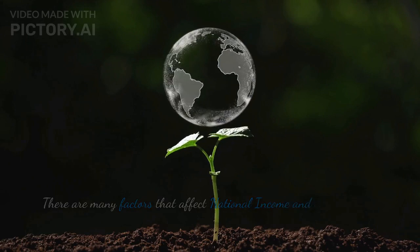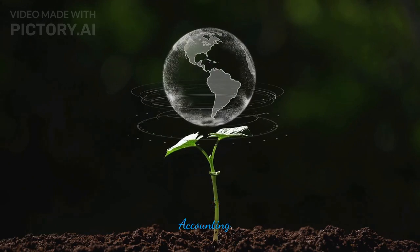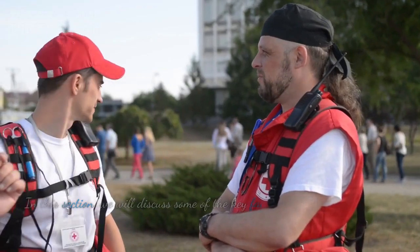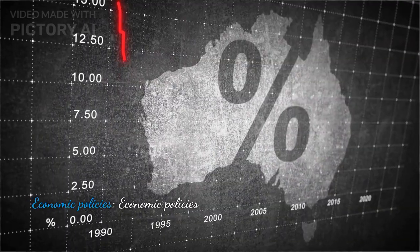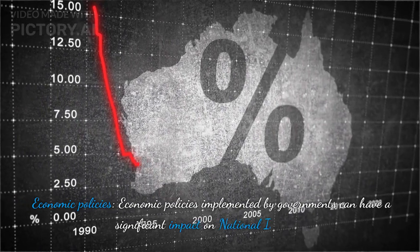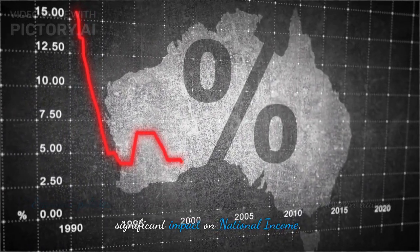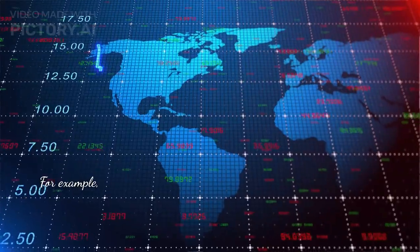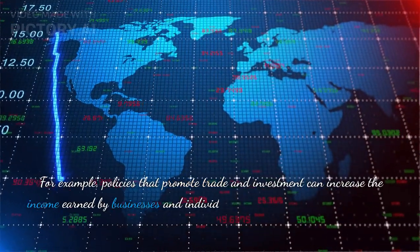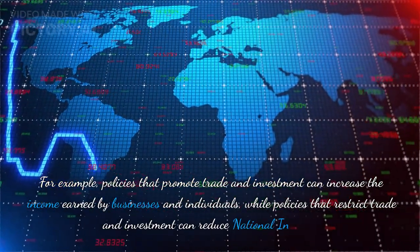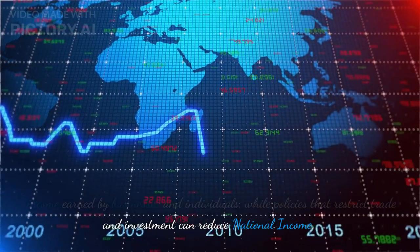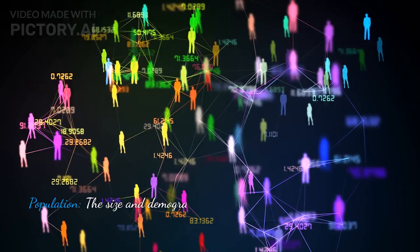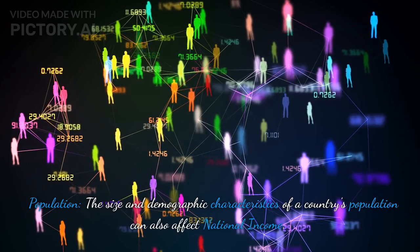There are many factors that affect national income and environmental accounting. Regarding factors affecting national income — economic policies: policies implemented by governments can have a significant impact on national income. For example, policies that promote trade and investment can increase the income earned by businesses and individuals, while policies that restrict trade and investment can reduce national income.